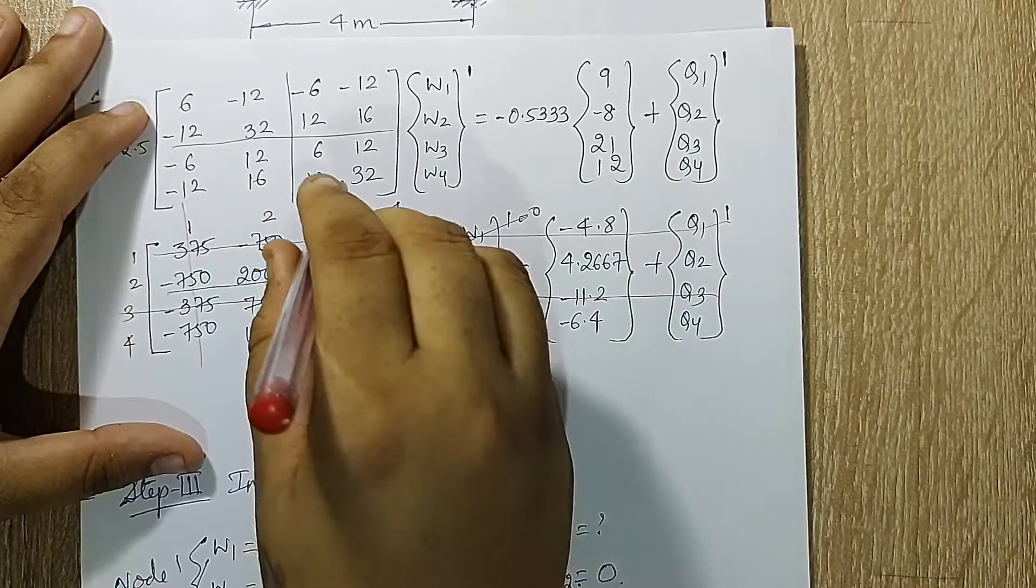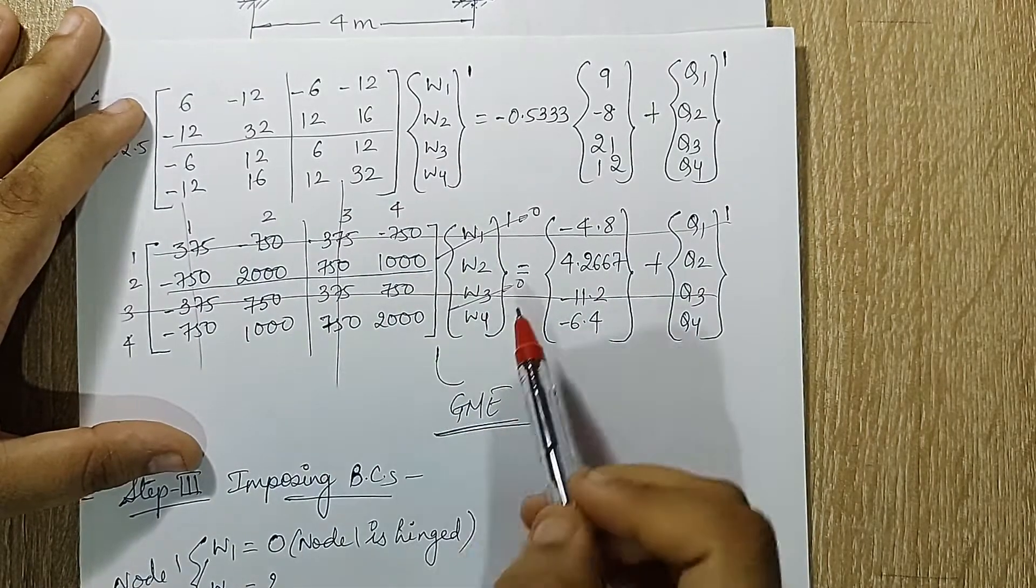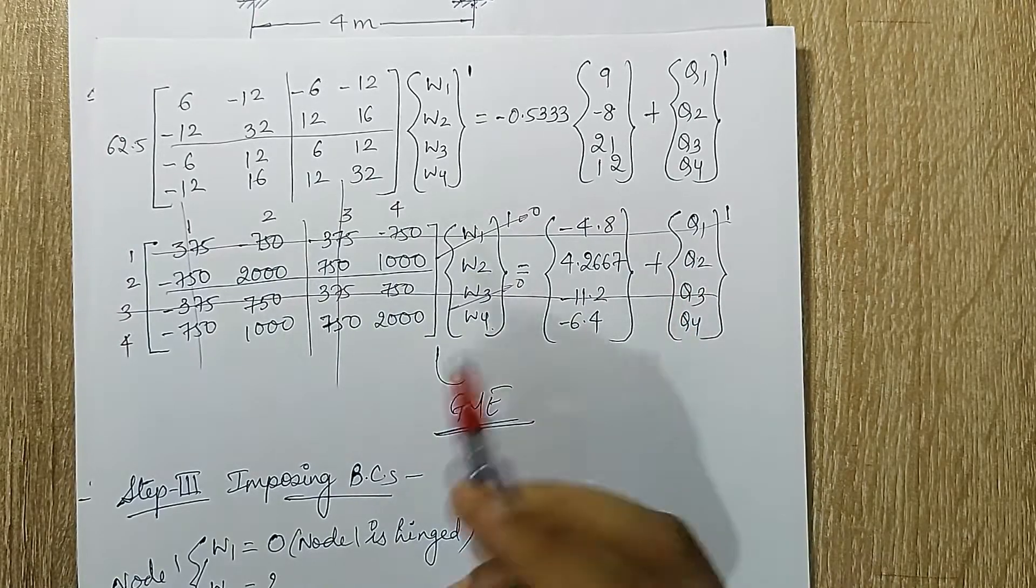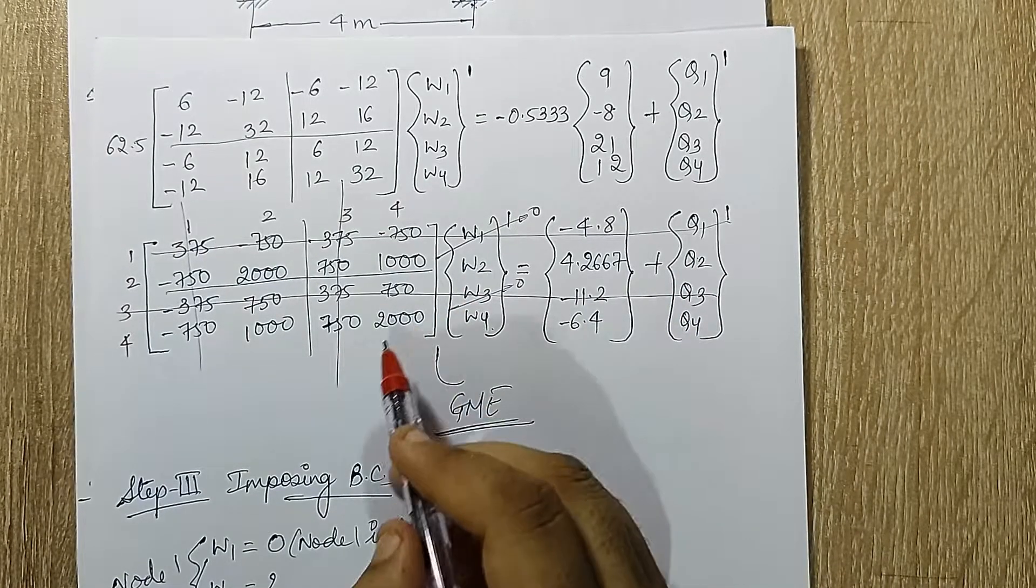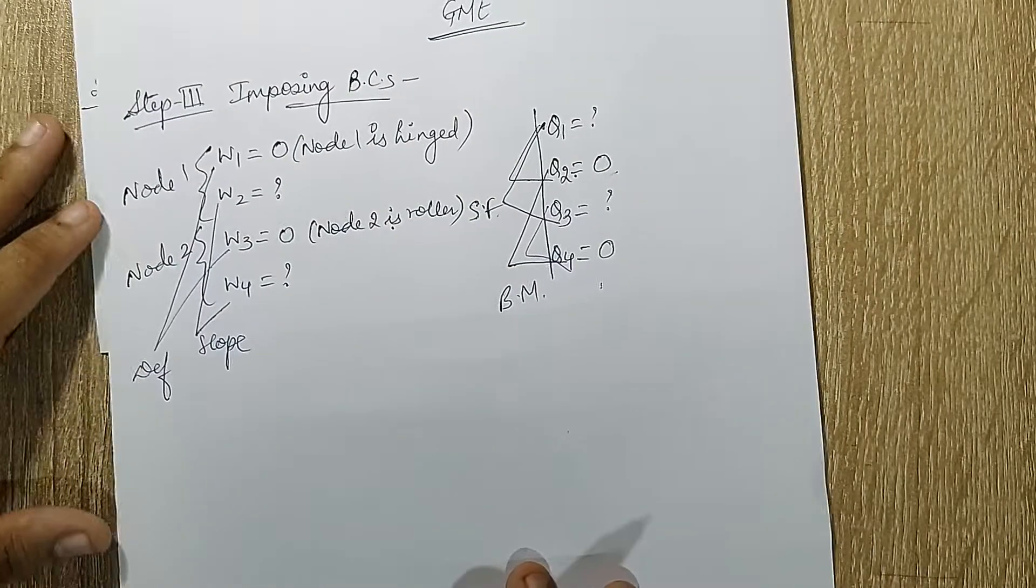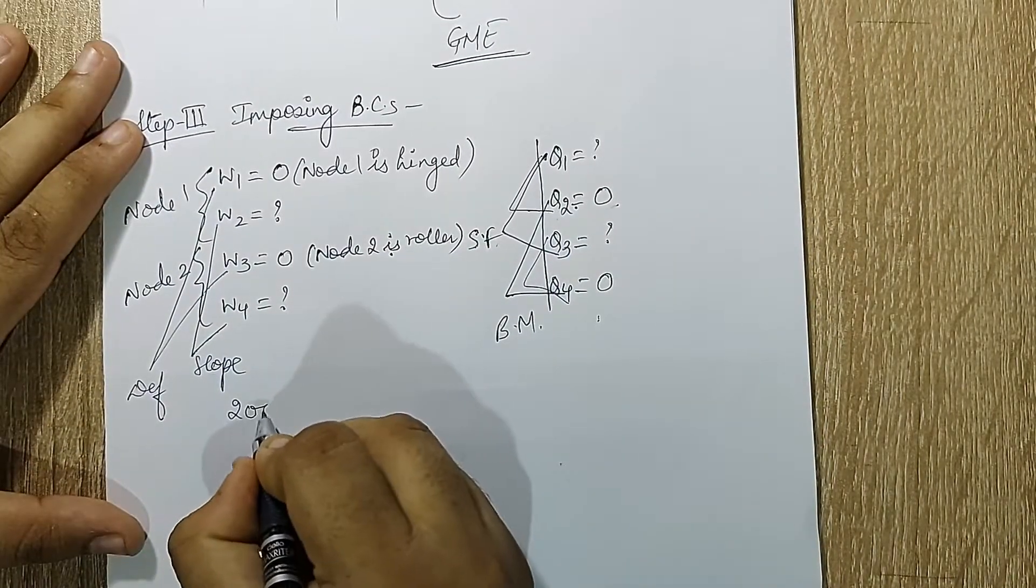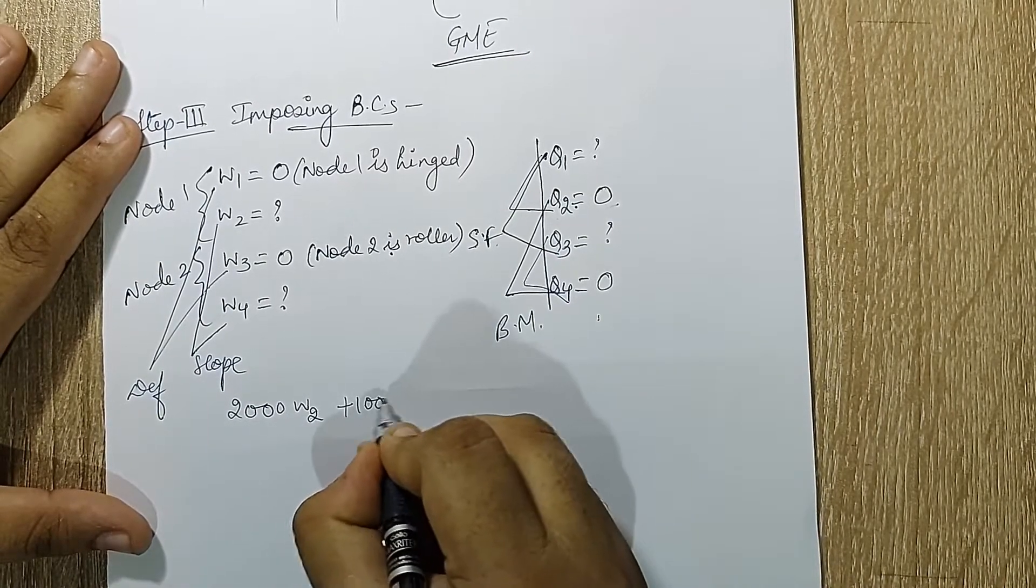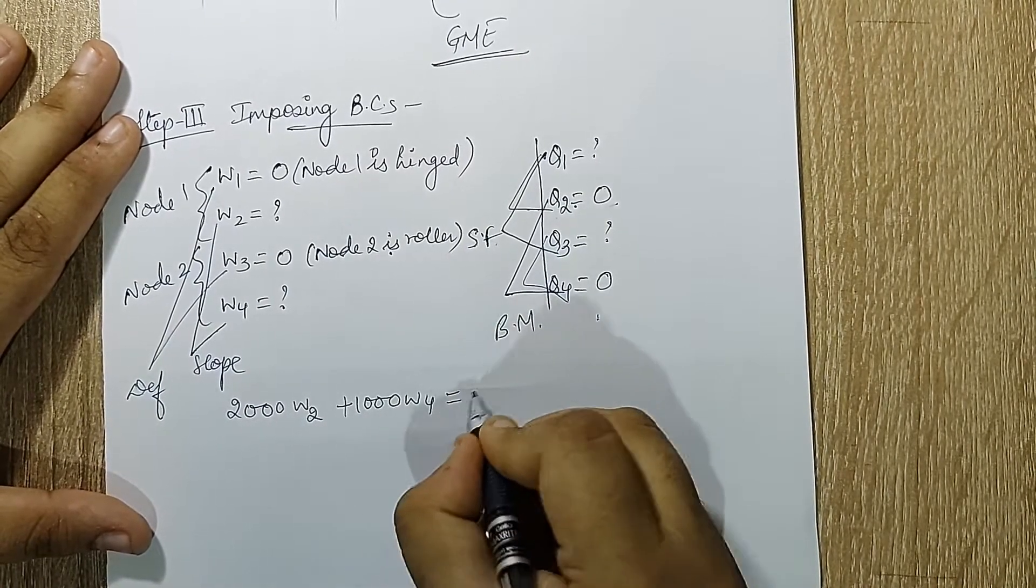Now whatever remains is going to give me the value of w2 and w4, because q2 and q4 are 0. Then I'll revisit the matrix and calculate the value of q1 and q3. So I'll just write down the equations now. I have 2000 w2 plus 1000 w4 is equal to minus 0.5333.